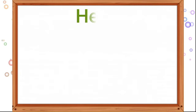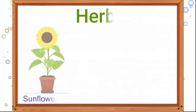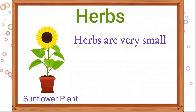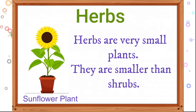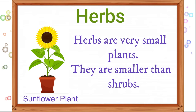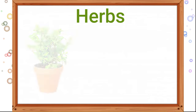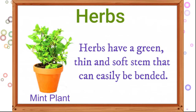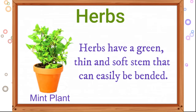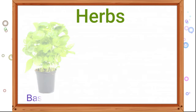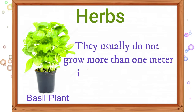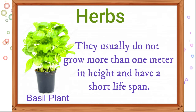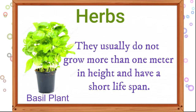Now children, let us learn about herbs. Herbs are very small plants; they are smaller than shrubs. Herbs have a green, thin, and soft stem that can easily be bent. They usually do not grow more than one meter in height and have a short lifespan.